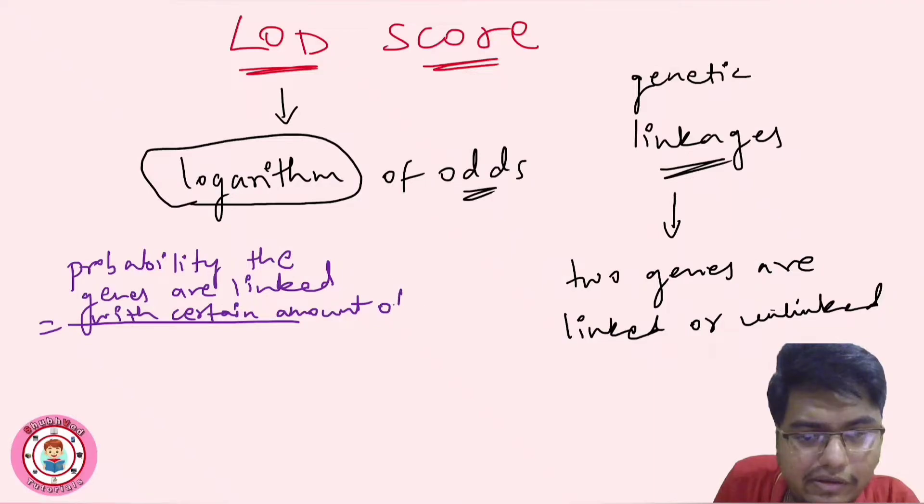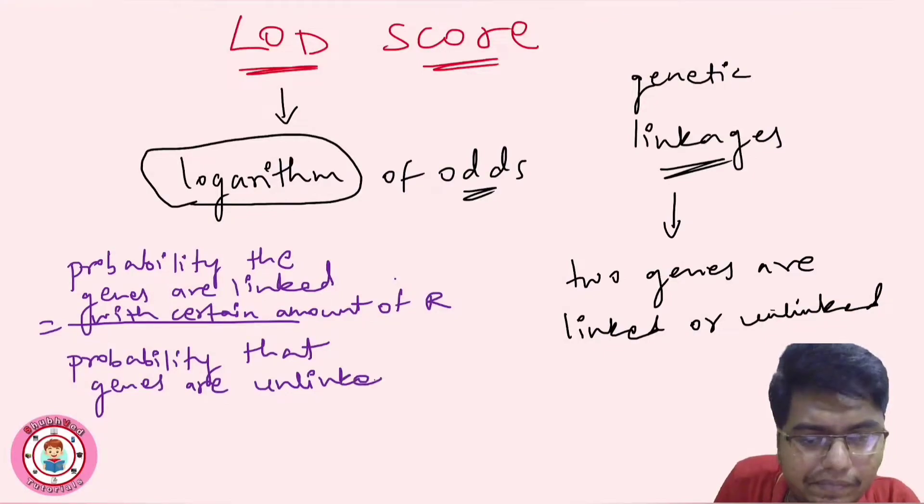I will write R here to the ratio probability that genes are unlinked. Genes are unlinked means 50 percent recombination.